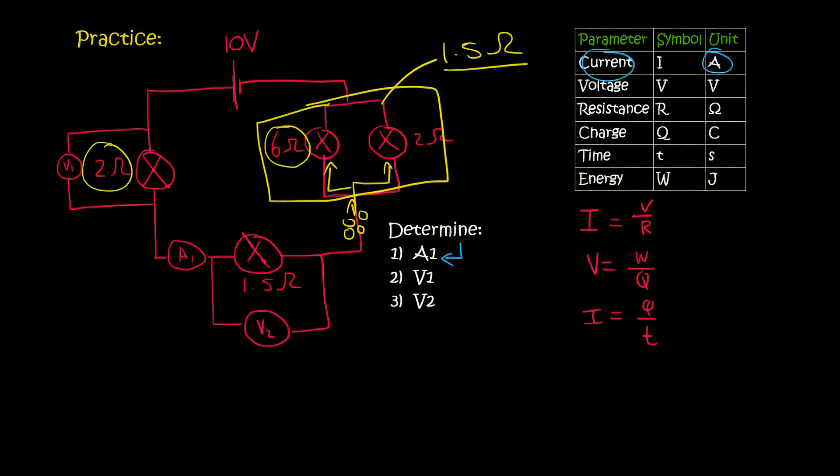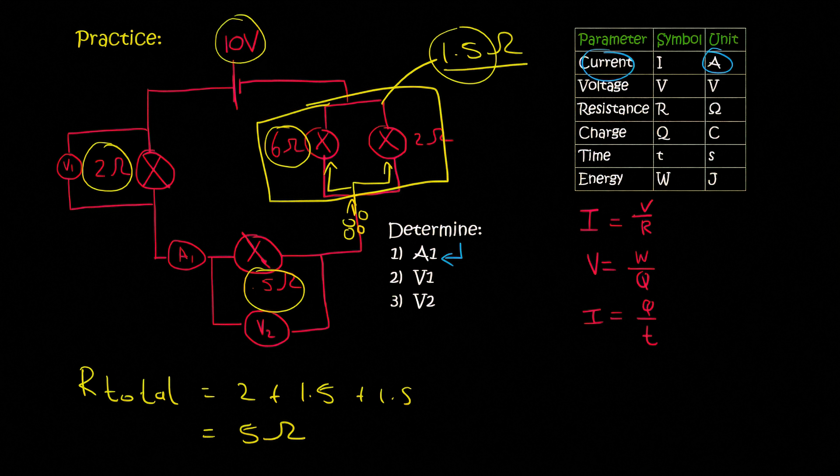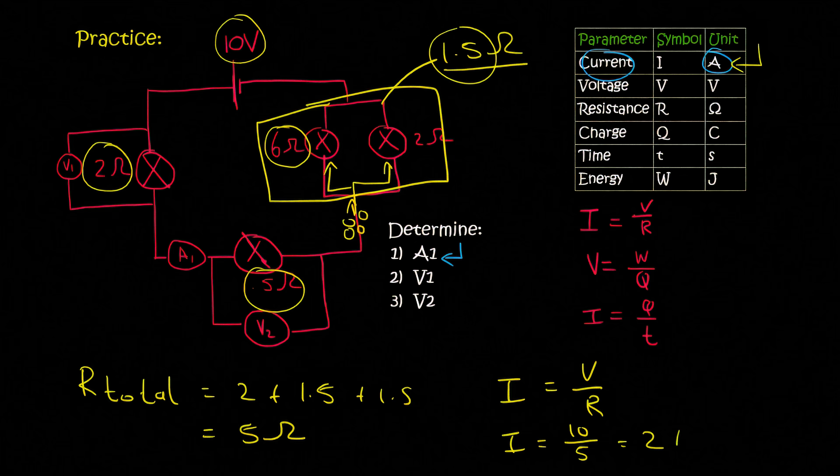Now what we can do is we can add this number plus this number plus this number. So we can call that R total, resistance total, is going to be 2 plus 1.5 plus 1.5. And that's going to give us 5 ohms. So now we know the total resistance in the circuit, and we also know the total voltage. And so we can use our formula. And so V is 10, and R is 5. And so that's going to give us 2. And then the unit is amps. So we've done question A1. It's 2 amps.